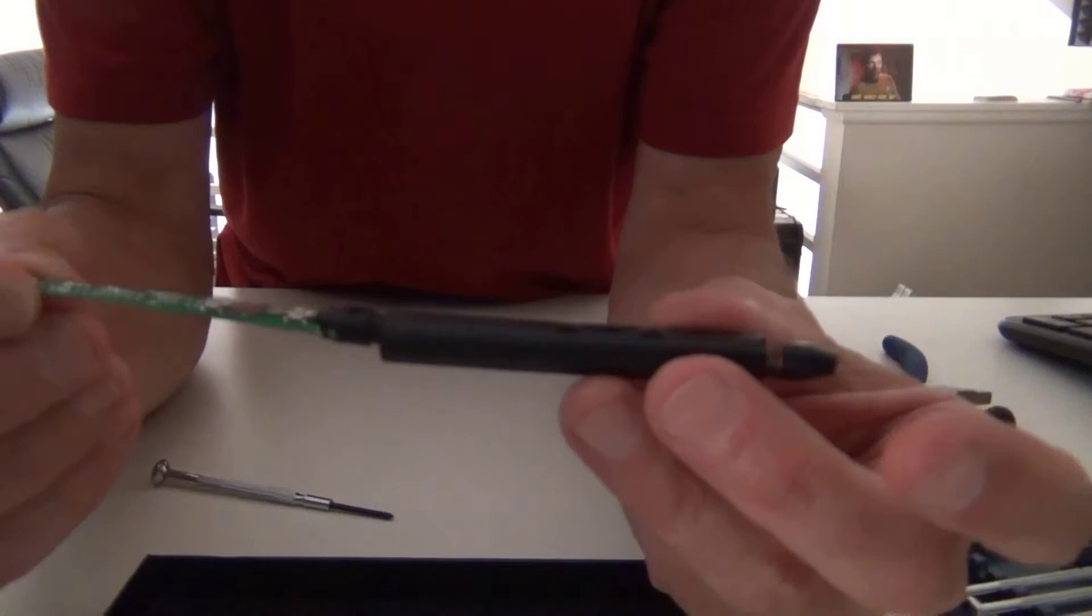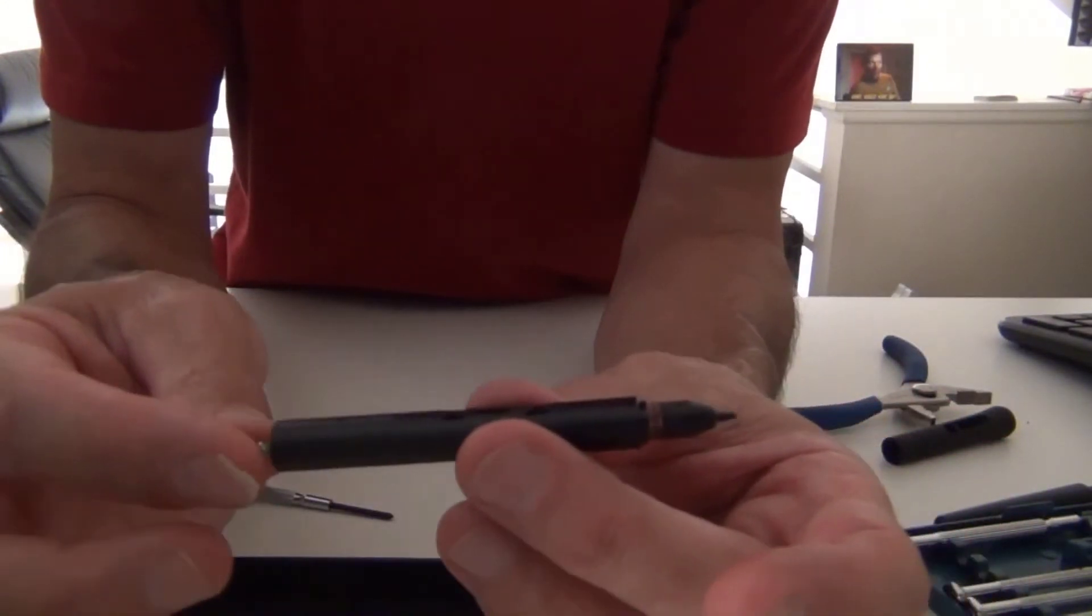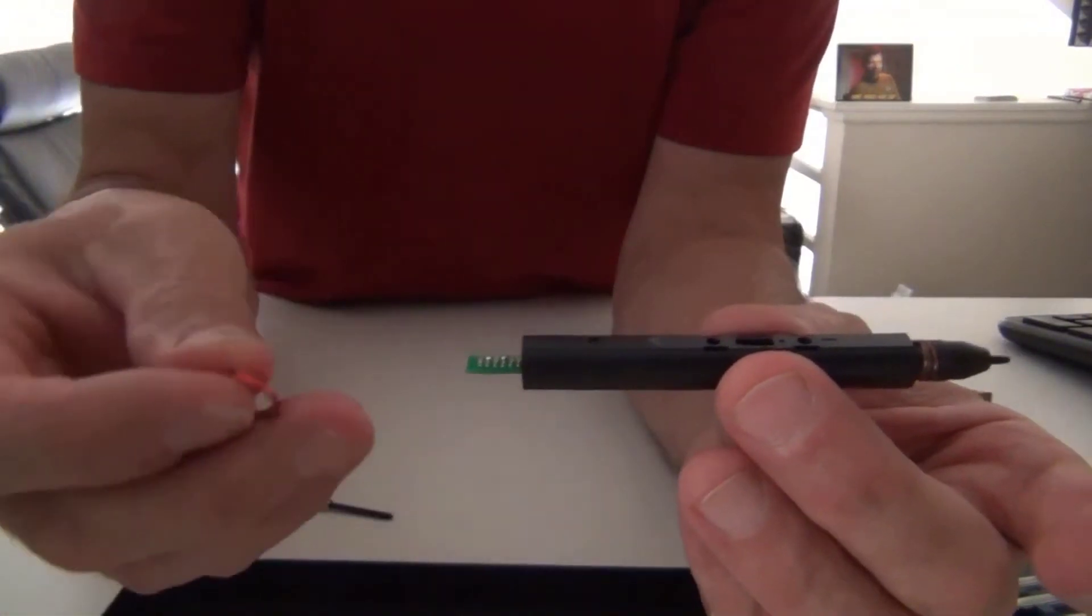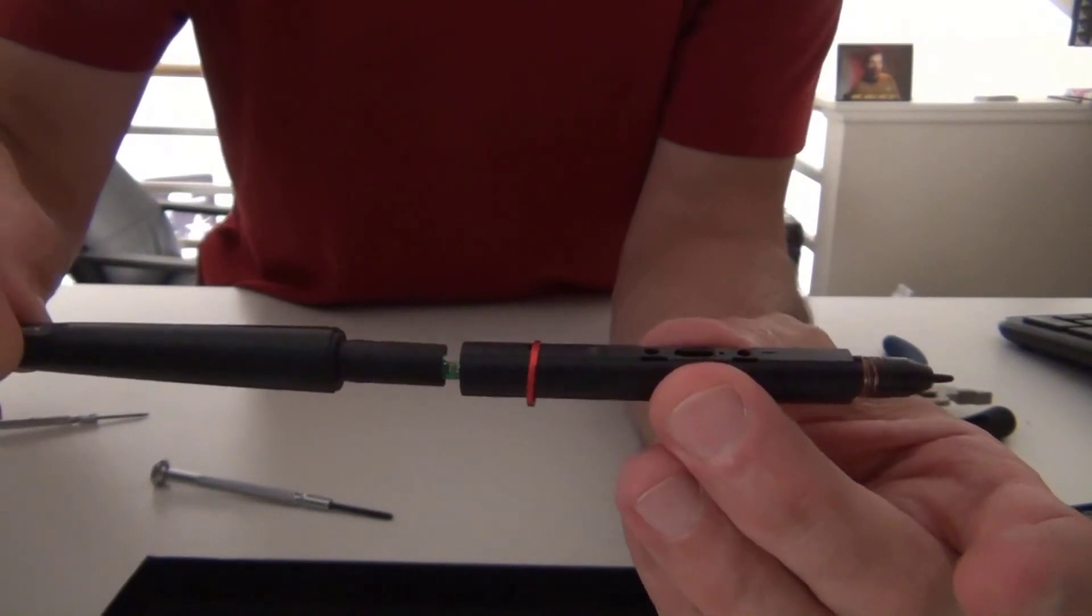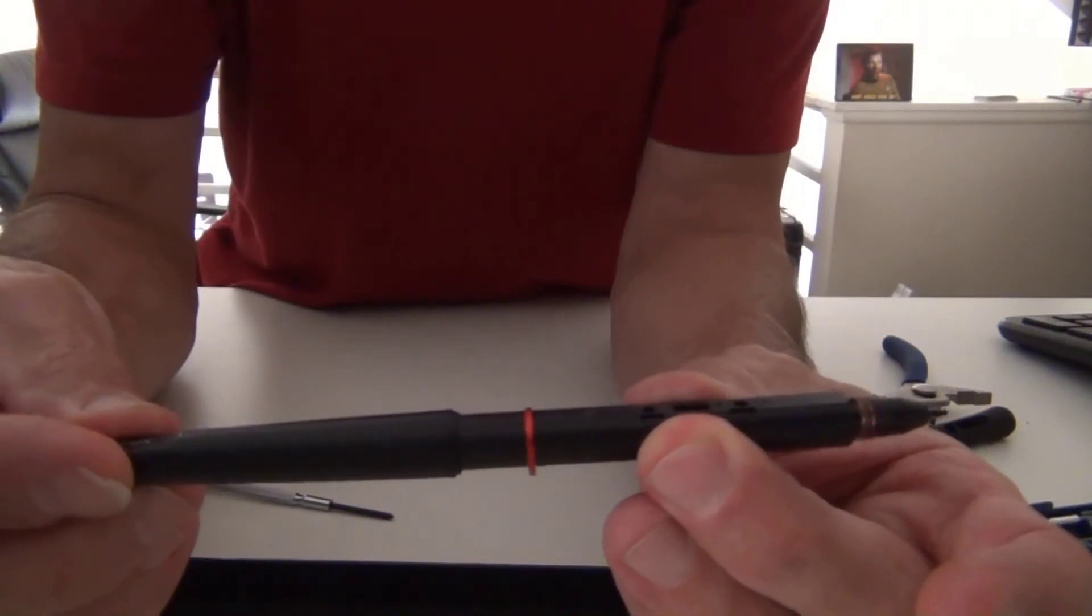And then when you put the pen back together, it's best to follow these steps. First slide the circuit board thing back in. It sits in there pretty good, so it's not a real issue. You put the red ring on, and then the other half of the pen. It fits together really nicely, so gently screw that back together. Or at least it did for me. Maybe I'm brilliant, I don't know.